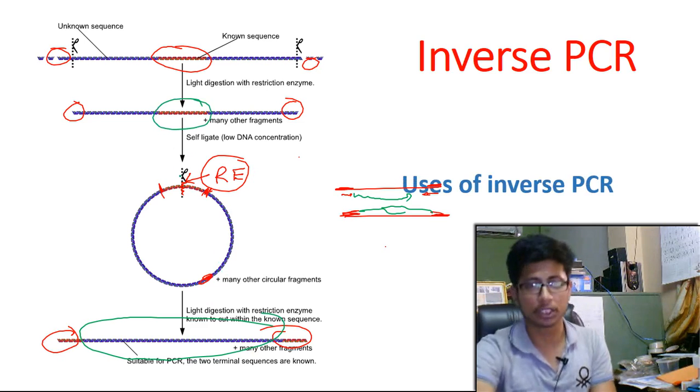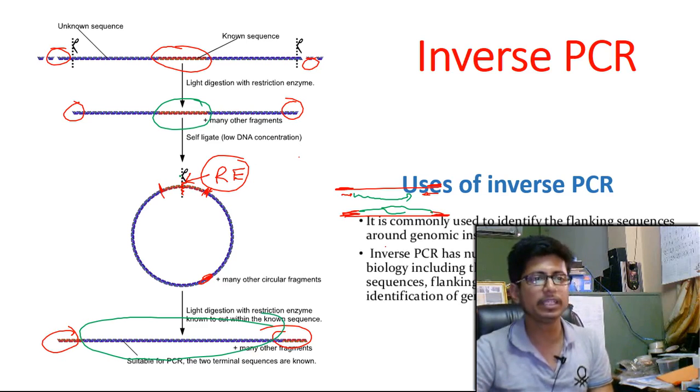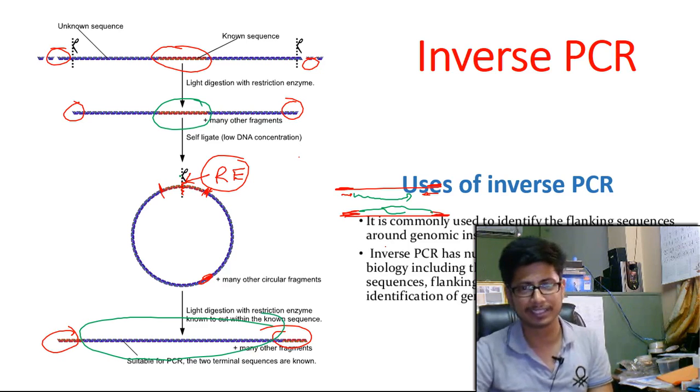Now what are the uses of this inverse PCR? It is commonly used to identify the flanking sequences around the genomic inserts and also the inverse PCR has numerous applications in molecular biology including the amplification and identification of the sequences flanking transposable elements and also for identification of different sorts of genomic inserts that will be very important to understand about several different genetic disorders and diseases.